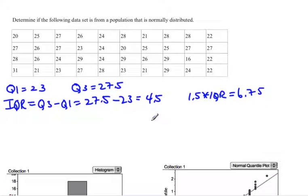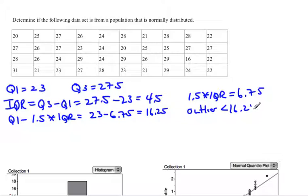An outlier is any number smaller than Q1 minus that number we just calculated. That would be 23 minus 6.75. Doing that subtraction, an outlier is any number smaller than 16.25.